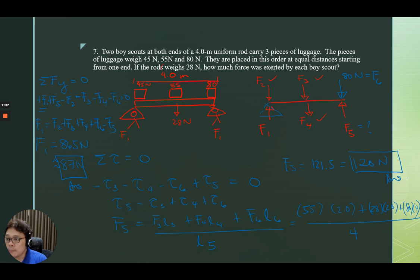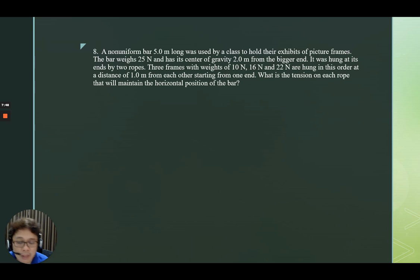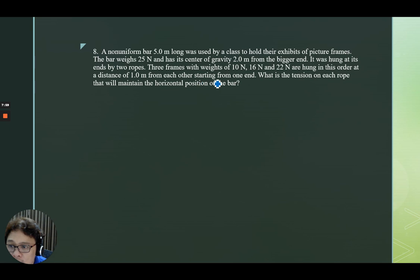Let's go to the next problem. A non-uniform bar, 5.0 meters long, was used by a class to hold their exhibits of picture frames. The bar weighs 25 newtons and has its center of gravity 2.0 meters from the bigger end. It was hung at its ends by two ropes. Three frames with weights of 10, 60, and 22 newtons are hung in this order at a distance of 1.0 meters from each other starting from one end — I think starting from the smaller end. What is the tension on each rope?